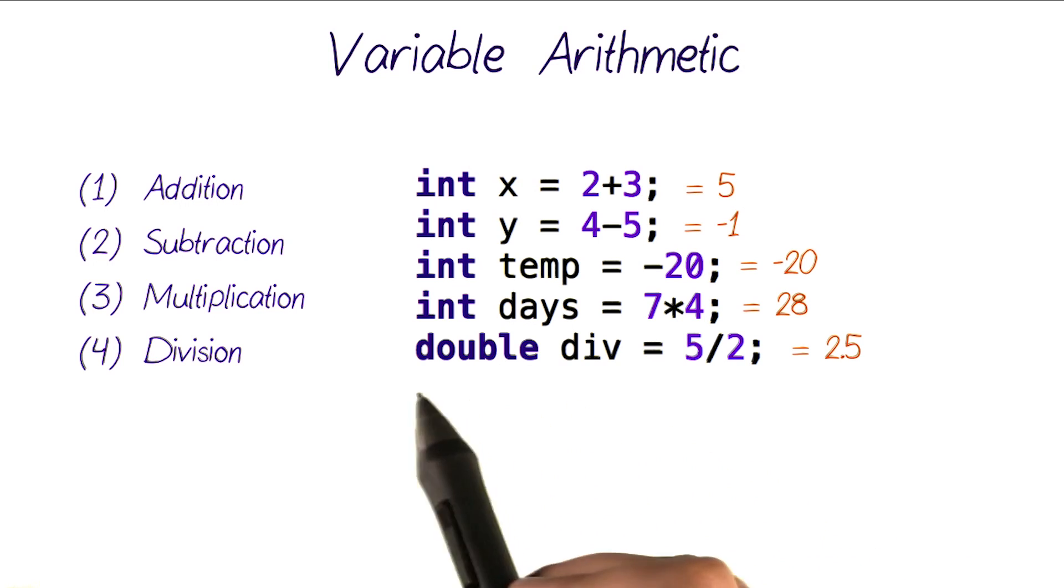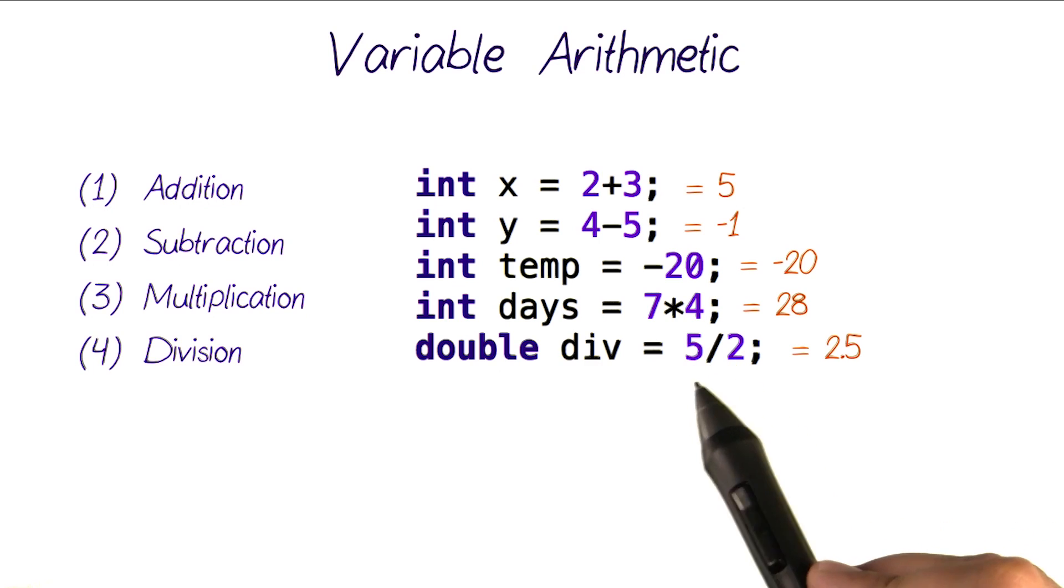However, even though we're storing the result in a double variable here, because we're dividing two integers 5 and 2, the result also would become an integer, throwing away that fractional part, and only storing the value 2 into our variable div.